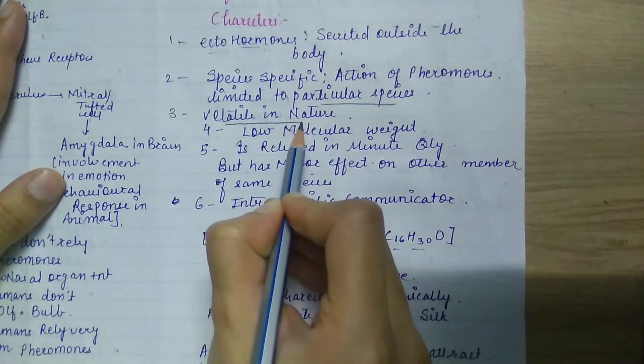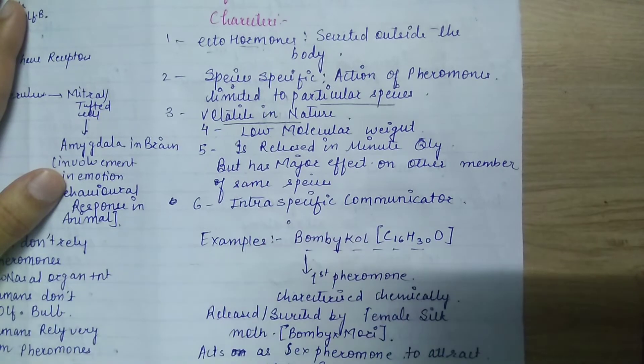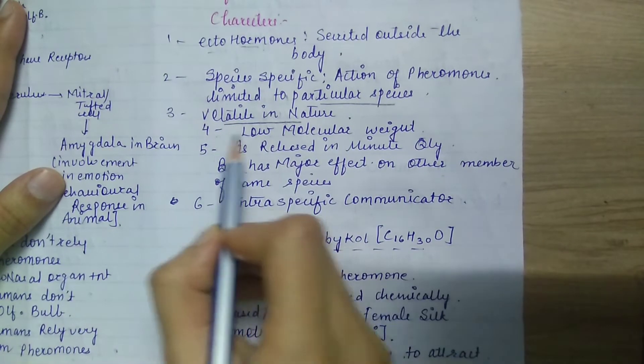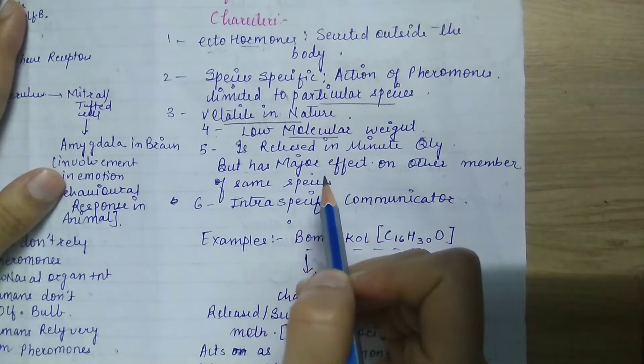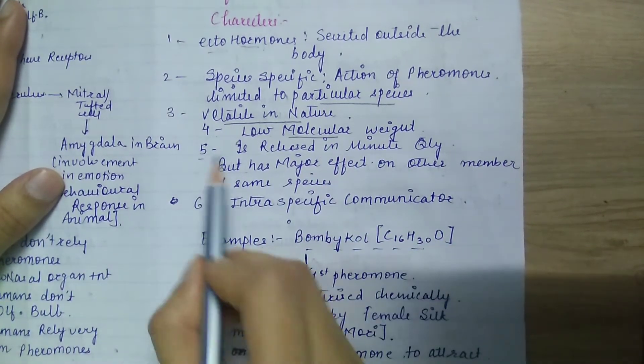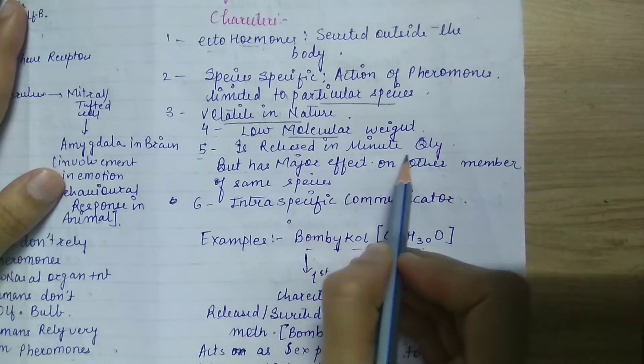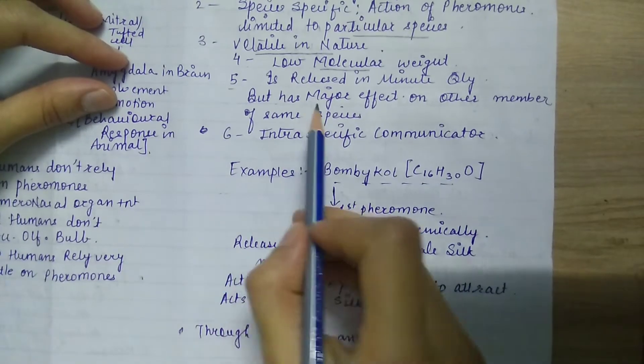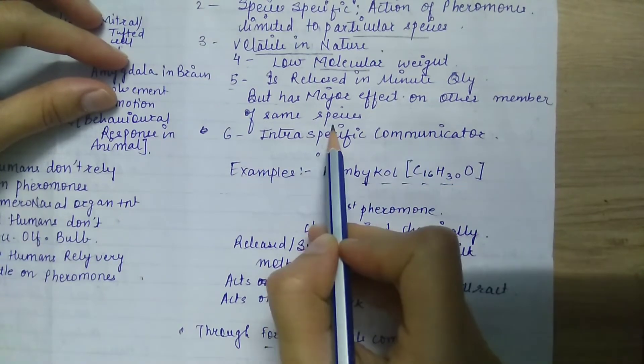Third point: it is volatile in nature. Volatile means it will be easily vaporized. Next is its low molecular weight. Fifth point: released in minute quantity—it is released in very low quantity but has major effect on other members of same species.